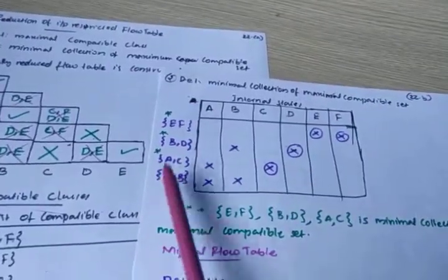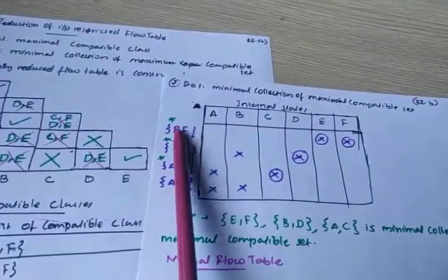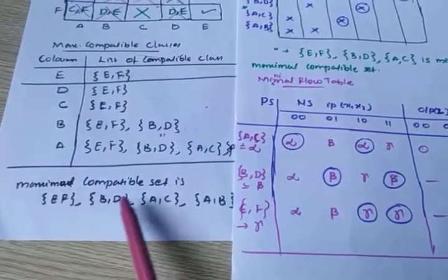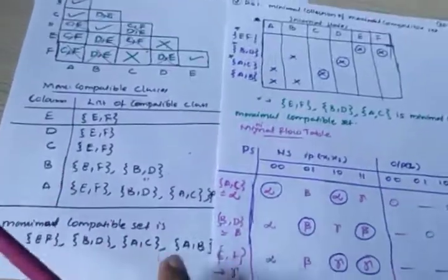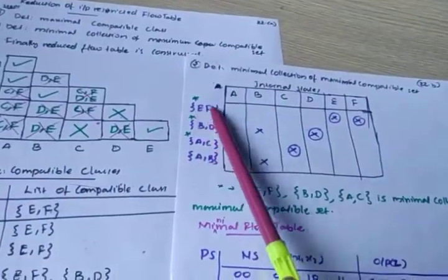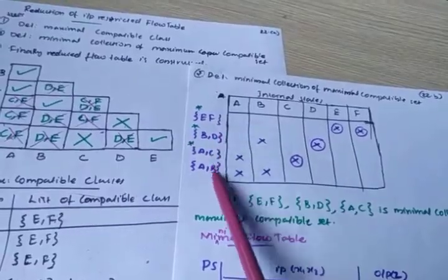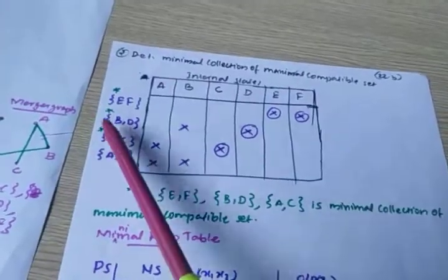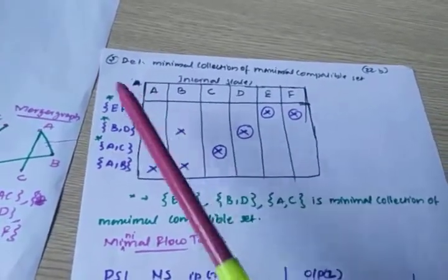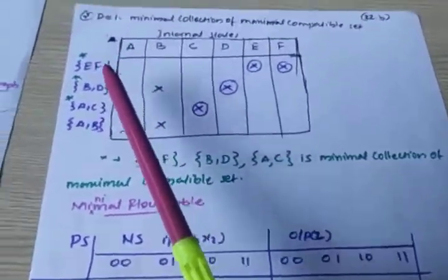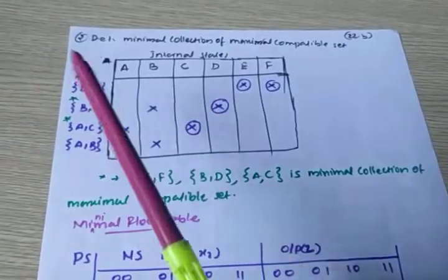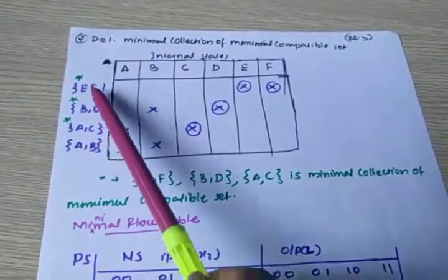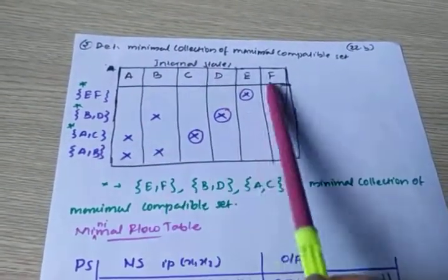In the column direction, you write the maximal compatible sets. The maximal compatible sets are: {E,F}, {B,D}, {A,C}, {A,B}. The rows contain states A, B, C, D, E, F, and the columns correspond to these maximal compatible sets.